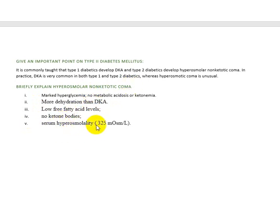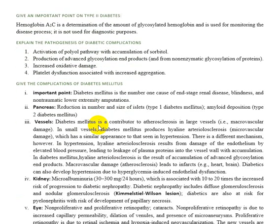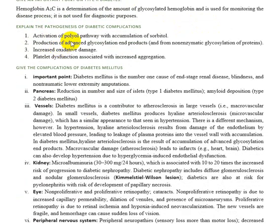Important points: hemoglobin A1c determines the amount of glycosylation represented over time. The pathogenesis of diabetic complications includes activation of the polyol pathway with accumulation of sorbitol.